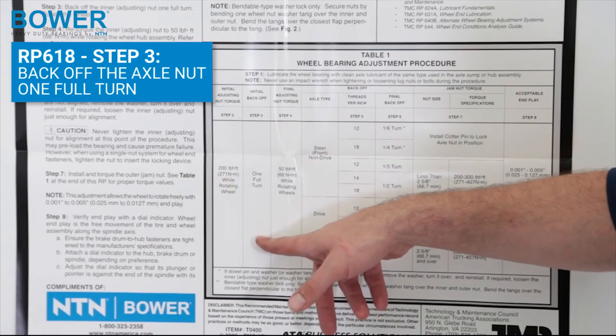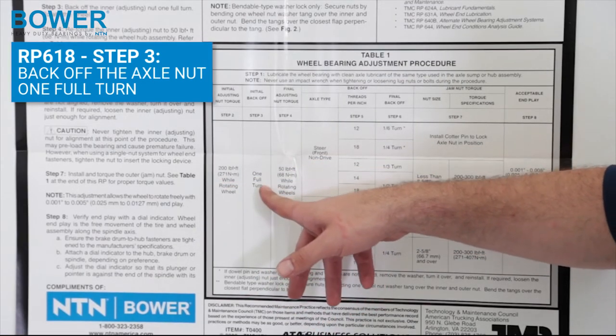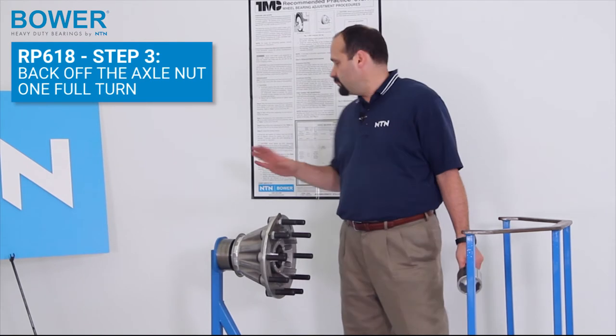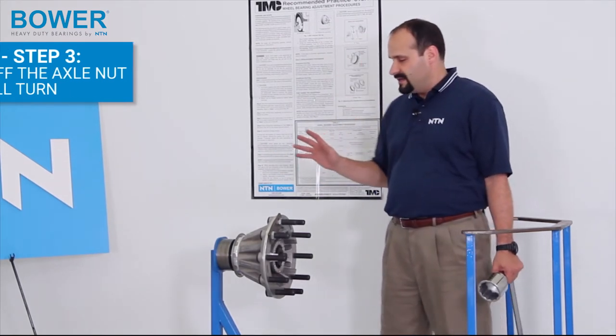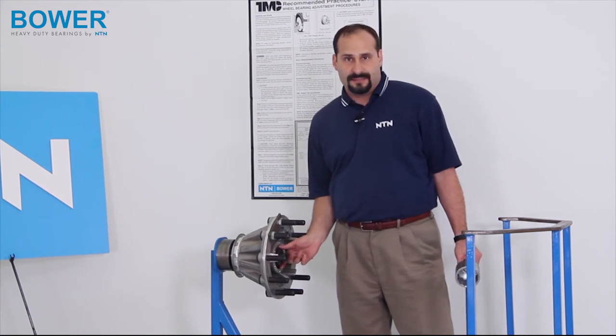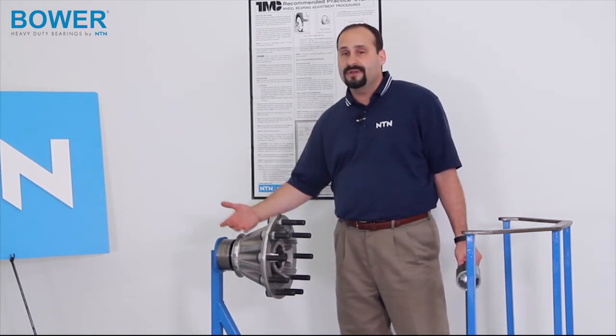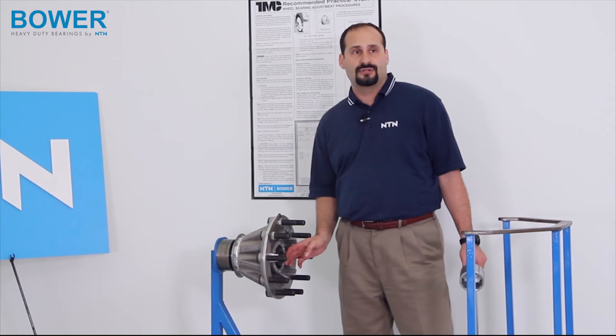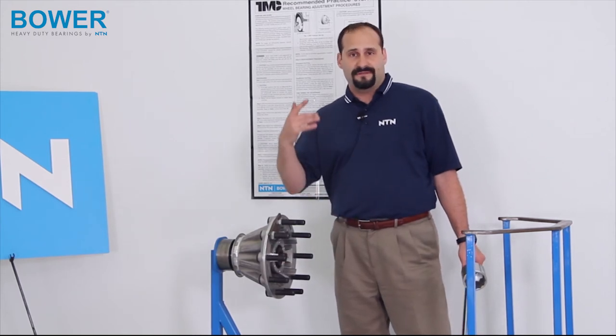Step three, we back off the nut one full turn. It's important to note, when we get to these back off stages, this is assumed to be a new spindle and a new nut. Over time, over wheel changes, these threads will become distorted and you won't have to back off as much.